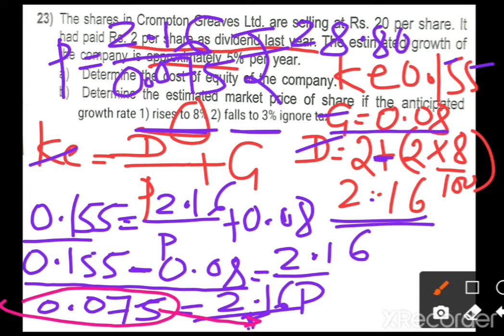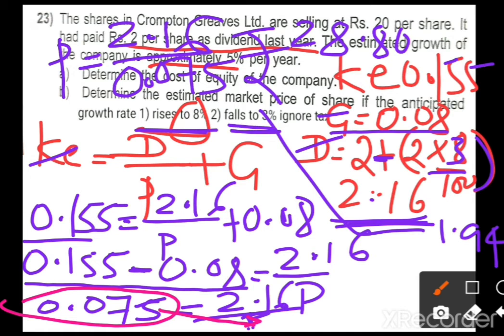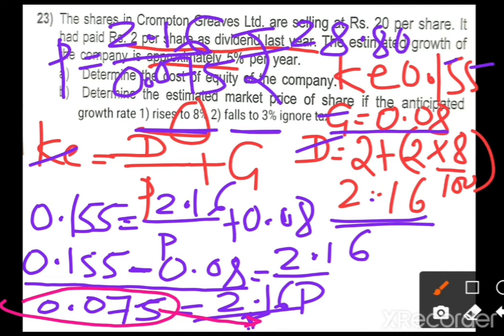The dividend for the third case (fall at 3%) is 1.94 rupees. With growth rate 0.03, Ke = 0.155, apply the formula and simplify to get the market price. You can take a screenshot of the steps. Complete this as homework.